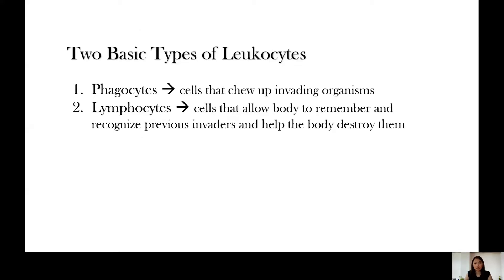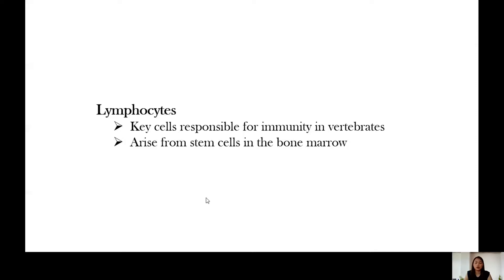There are two basic types of leukocytes. If you can still remember from the protein discussion, you have encountered this term. We have the phagocytes — these are the cells that chew up invading organisms — and we have the lymphocytes — these are the cells that allow the body to remember and recognize previous invaders and help the body to destroy them. We will be focusing on the second type, which is lymphocytes.